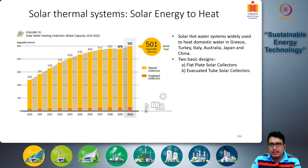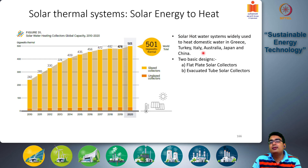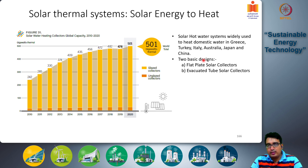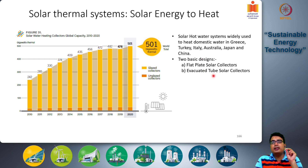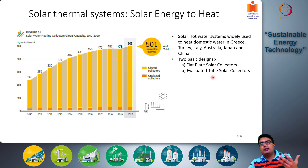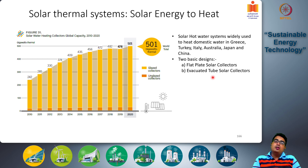There is a difference between glazed and unglazed collectors, which we will discuss shortly. Solar hot water systems are widely used in countries like Greece, Turkey, Italy, Australia, Japan, and China. There is also a need for a big push in India. The two basic designs differ in how they collect solar energy: flat plate solar collectors and evacuated tube solar collectors.